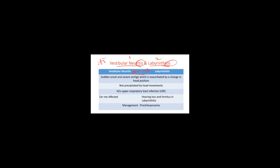The next topic is vestibular neuritis and labyrinthitis — they are very comparative topics. Both of them have '-itis,' which means inflammation. This inflammation is occurring because of some infection. Any upper respiratory tract infection (URTI) can lead to vestibular neuritis or labyrinthitis. Unlike BPPV, which is precipitated by a change in head position, these conditions are only exacerbated — not precipitated — by a change in head position. There is always a history of upper respiratory tract infection.